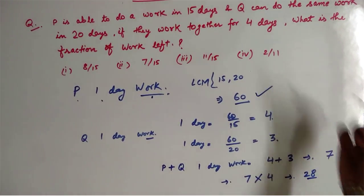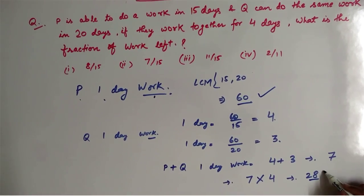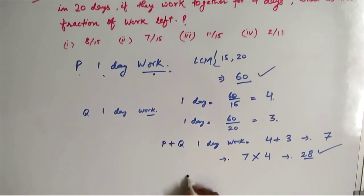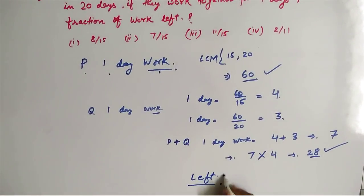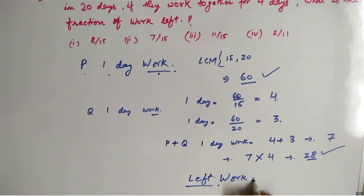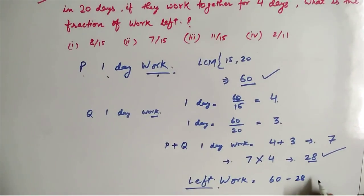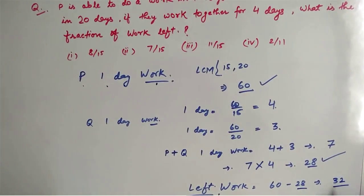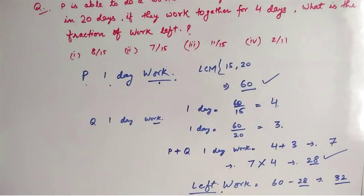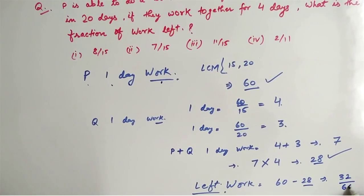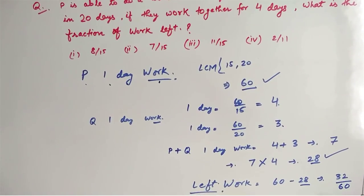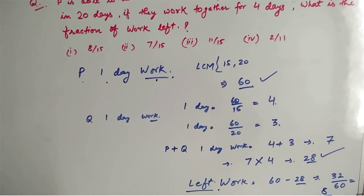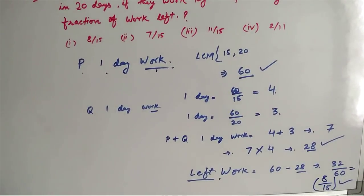Our total work was 60 and we have already completed 28 amount of work. The amount of work left is what we have been asked in the question. Work left is simply 60 minus 28, which gives 32. Since we have been asked for the fraction of work left, we divide 32 by the total work of 60, which simplifies to 8 by 15. So our answer is 8 by 15.